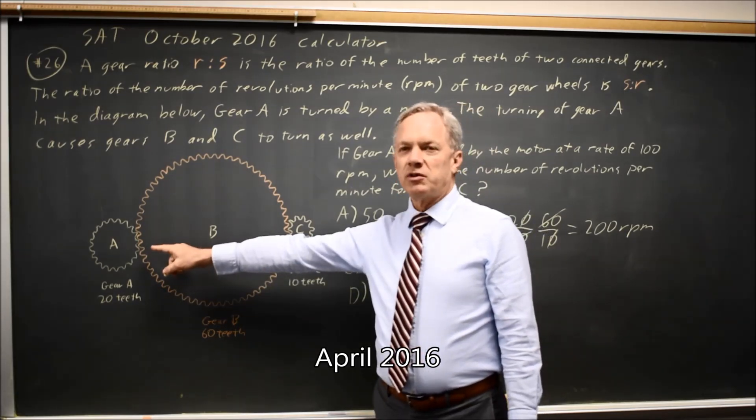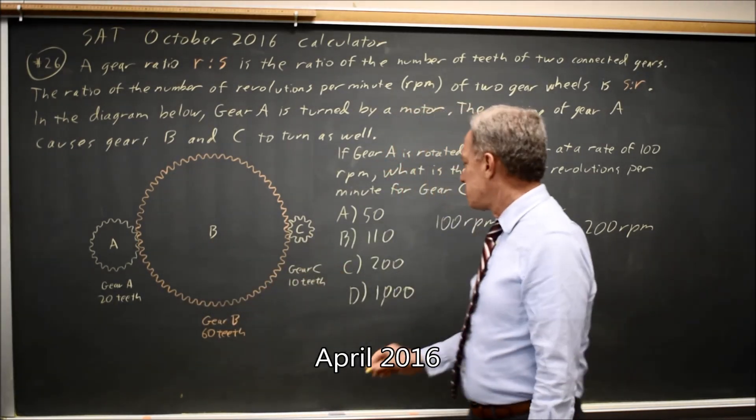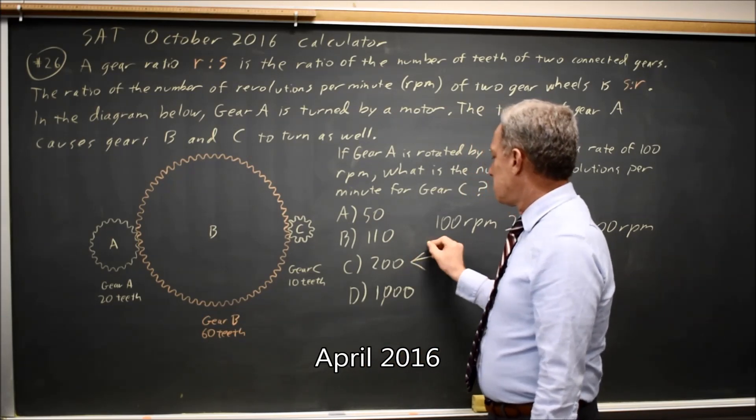So 100 revolutions for A will be twice as many revolutions for C, which is 200. Choice C.